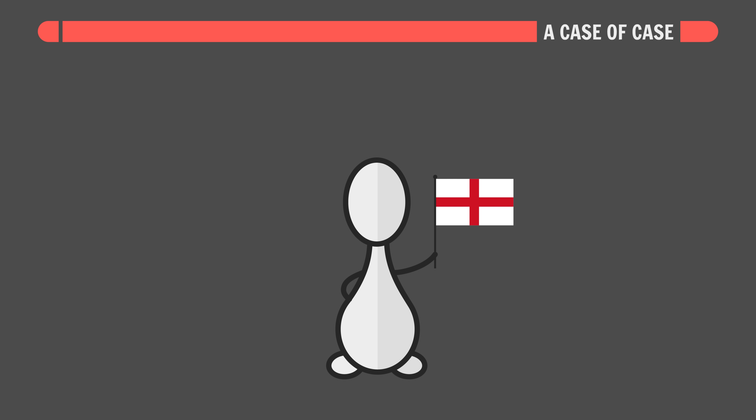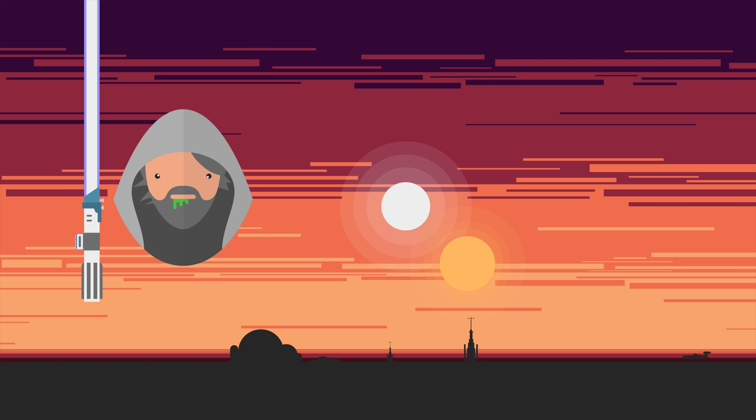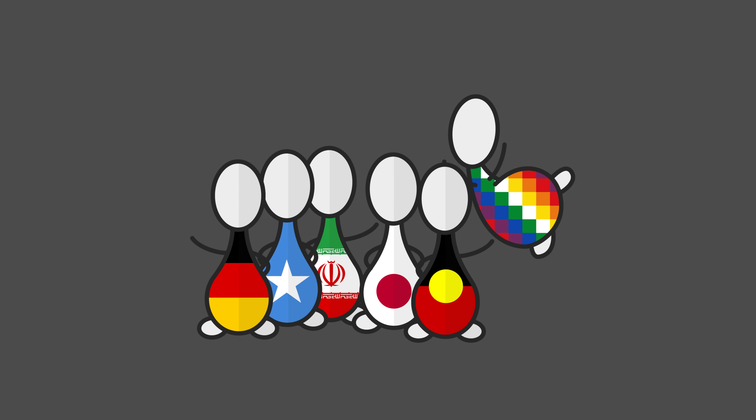In English, nouns are pretty boring. Sure, they identify classes of people, places, things, and ideas. But apart from that, they don't really do a whole lot.